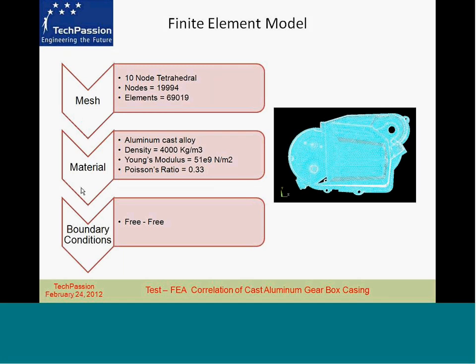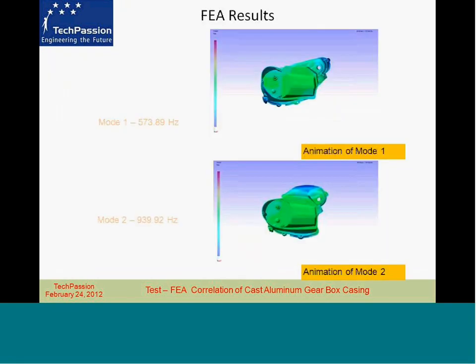The material, as already mentioned, is cast aluminum alloy with a density of 4,000 kilograms per meter cube, a Young's modulus of 5×10^10 Newton per meter square, and a Poisson's ratio of 0.33. The analysis was done with free boundary conditions.